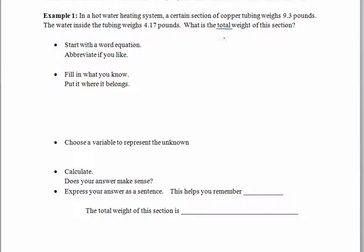The first thing we want to do is read our scenario here and figure out what we're doing. We have a total weight, so that probably tells us that we might want to add some things. Let's take the copper weight, and inside of the copper tubing is some water. That's going to add some weight to what's happening here, so maybe we have adding some water weight. And when we get done, we end up with a total. There's our word equation. Copper weight plus water weight equals total weight.